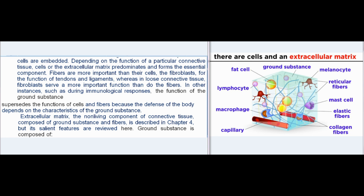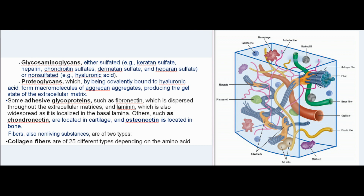The extracellular matrix, the non-living component of connective tissue, is composed of ground substance and fibers. Ground substance is composed of glycosaminoglycans — either sulfated (e.g., keratan sulfate, heparin, chondroitin sulfates, dermatan sulfate, and heparan sulfate) or non-sulfated (e.g., hyaluronic acid) — and proteoglycans, which by being covalently bound to hyaluronic acid form macromolecules of aggrecan aggregates producing the gel state of the extracellular matrix. Adhesive glycoproteins include fibronectin, laminin, chondronectin (in cartilage), and osteonectin (in bone).